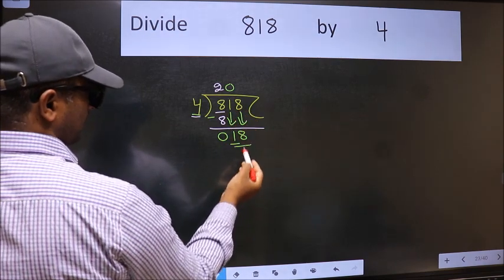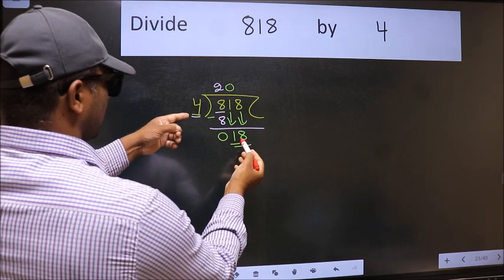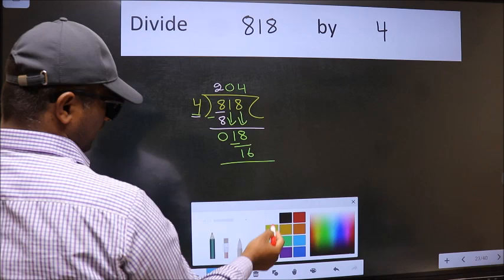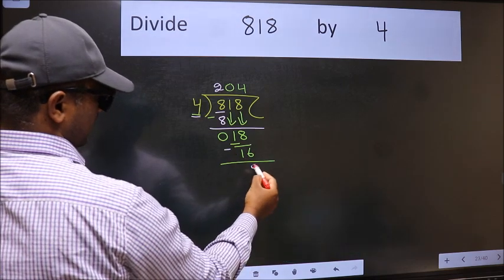Now 18. A number close to 18 in the 4 table is 4 fours is 16. Now we should subtract. We get 2.